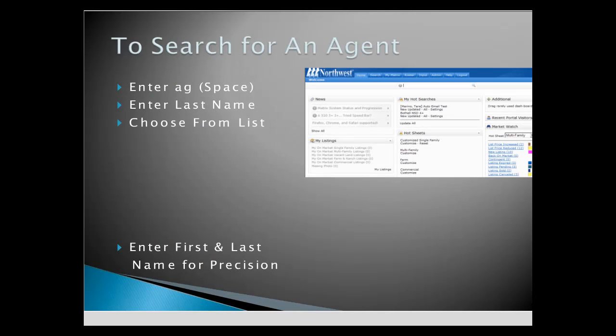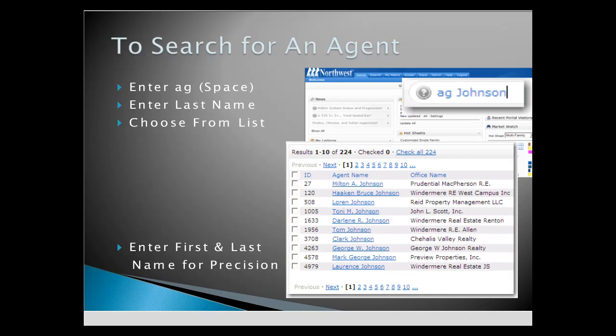To bring up an agent's information page quickly, in the Speed Bar type AG for agent, hit the space bar, and type the last name. When you click Enter, a list of all agents with the same last name — for example, Johnson — will display.